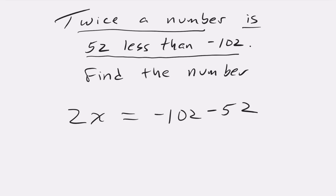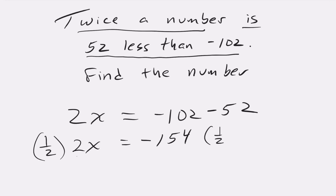Now we have an algebraic equation. So let's solve. We have 2x is equal to, and we add the two negatives. That gives us negative 154. Now we multiply both sides by 1 half. That leaves us with x, or our number, is equal to negative 77.